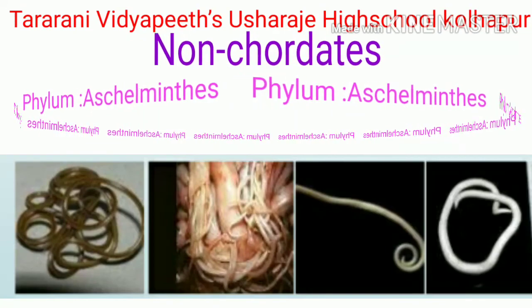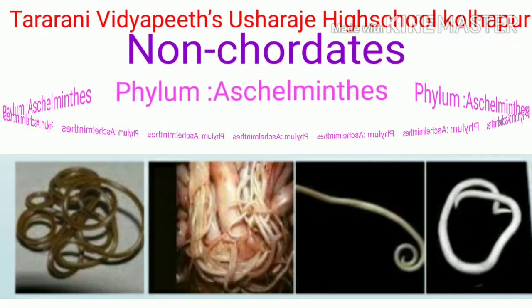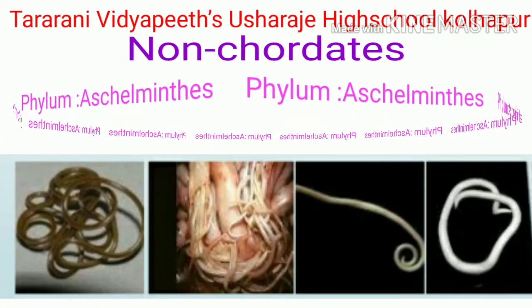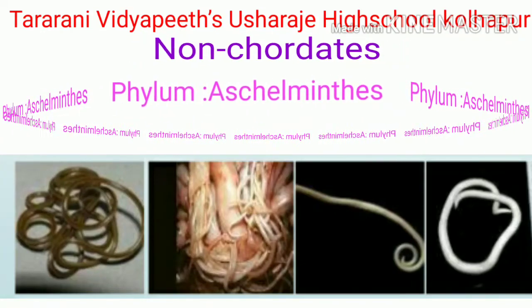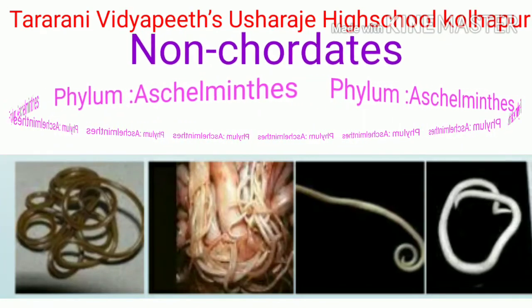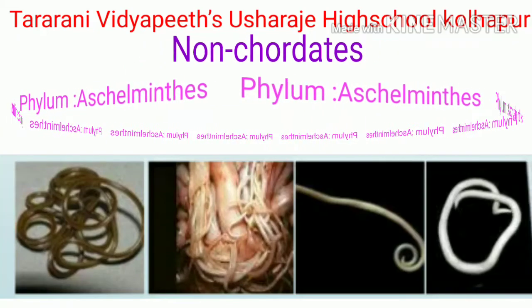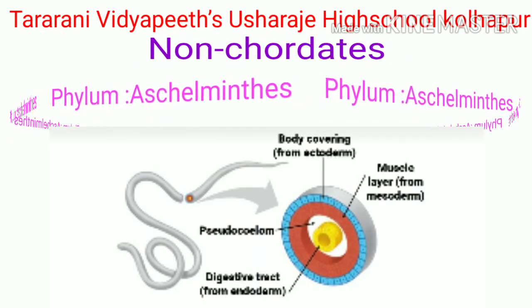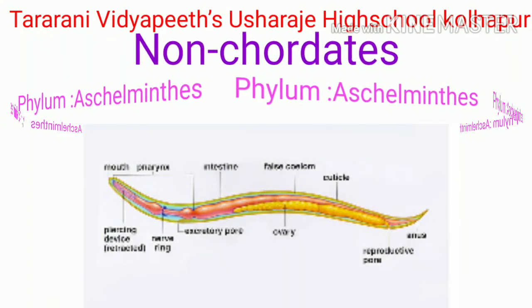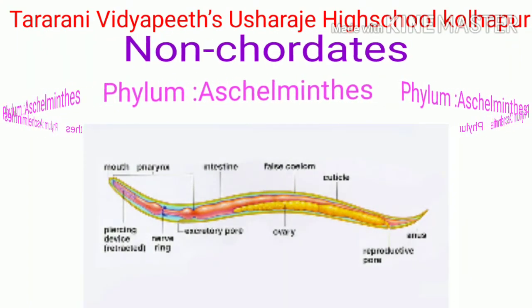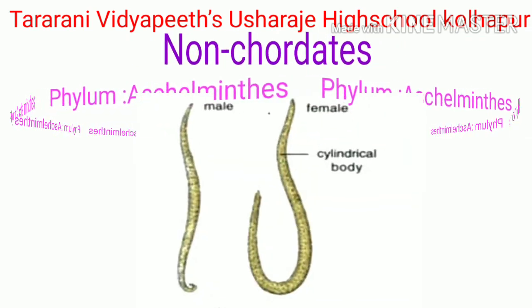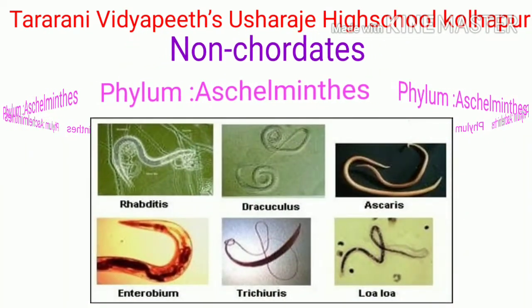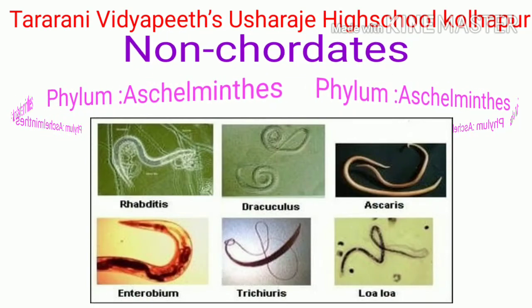Examples of phylum Platyhelminthes are Planaria, liver fluke, and tapeworm. Phylum Aschelminthes: the body is long, thread-like, or cylindrical, hence they are called roundworms. These animals are either free-living or endoparasites. Free-living animals are aquatic or terrestrial. The body is triploblastic and pseudocoelomate, non-segmented, and covered with tough cuticles. These animals are unisexual. Examples include Ascaris, Filaria, and Loa loa.